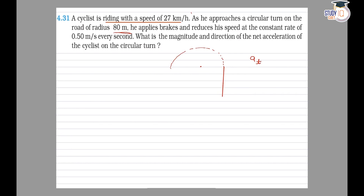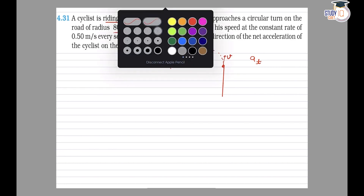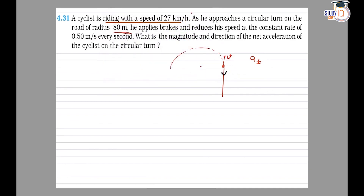Suppose at this point, this is the direction of velocity. Tangential acceleration is opposite to velocity, because as brakes are applied the speed would reduce. So this is the direction of tangential acceleration, which is opposite to the velocity. Tangential acceleration has a value equal to 0.5 meters per second squared.